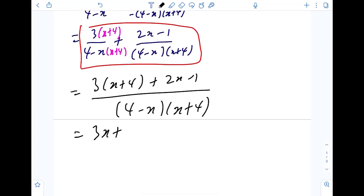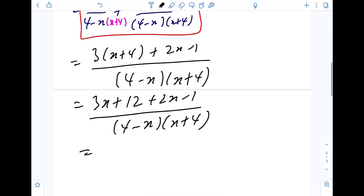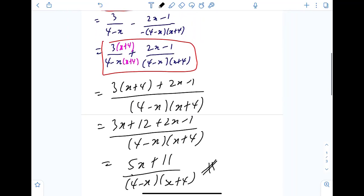3x plus 12, plus 2x minus 1, everything divided by 4 minus x, x plus 4. So this will be equal to 3x plus 2x, that will be 5x, plus 12 minus 1, that will be 11, everything divided by 4 minus x, x plus 4. This is our final answer for this question.